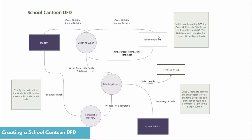The order ID and the cost move into the next process, which is the printing of the orders. Once you know what the student has ordered, how much it costs, and who the student is, you can save that information to a transaction log and provide a summary of all the orders to the school administration. Finally, once the printed order is complete, a printed receipt is created and that goes to the student along with their lunch.